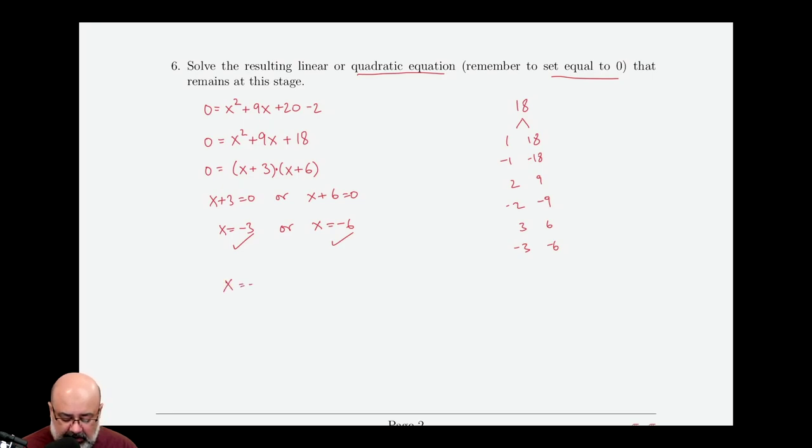So you would write as a summary, x equals negative 3 and x equals negative 6 are the solutions to the equation. Thank you!